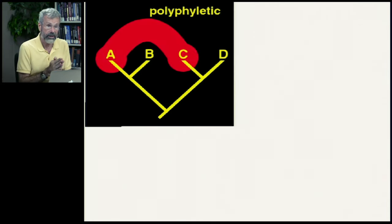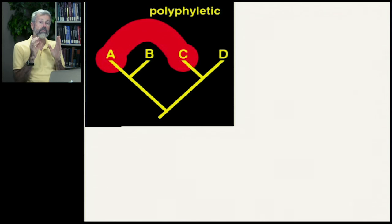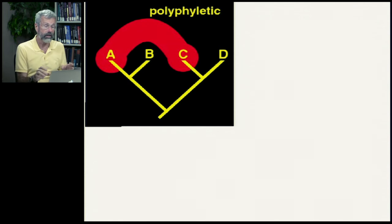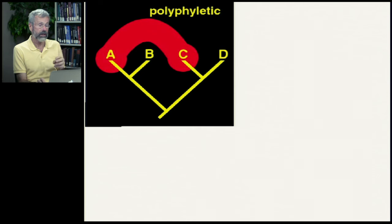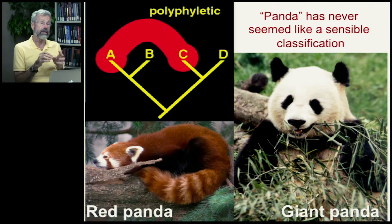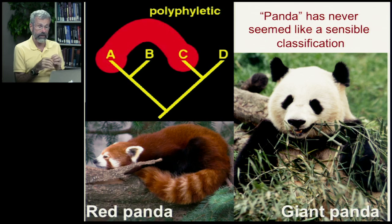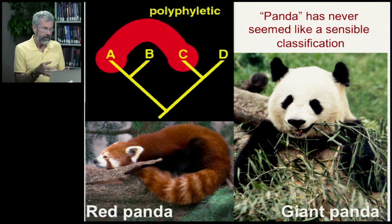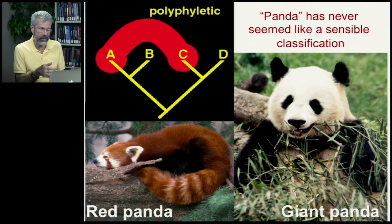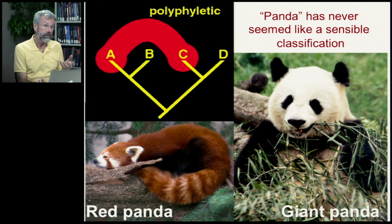Another way things can go wrong is when people mistakenly use a term to describe a grouping of organisms that may have multiple common ancestors. It turns out that the term 'panda' is a polyphyletic term. Are giant pandas and red pandas really the same? There are some similarities in the markings on the face, but red pandas have a tail while giant pandas don't. Are they really the same evolutionary unit? Do they belong in the same taxonomic classification?